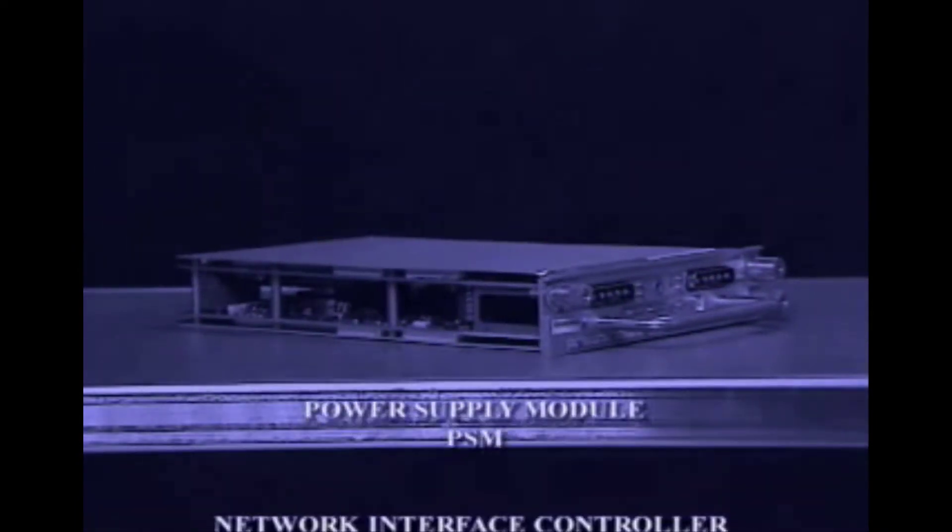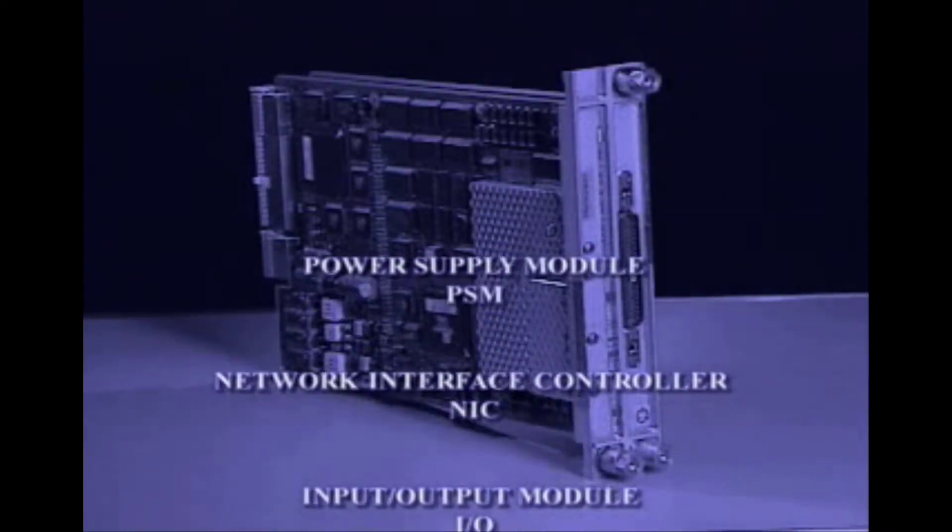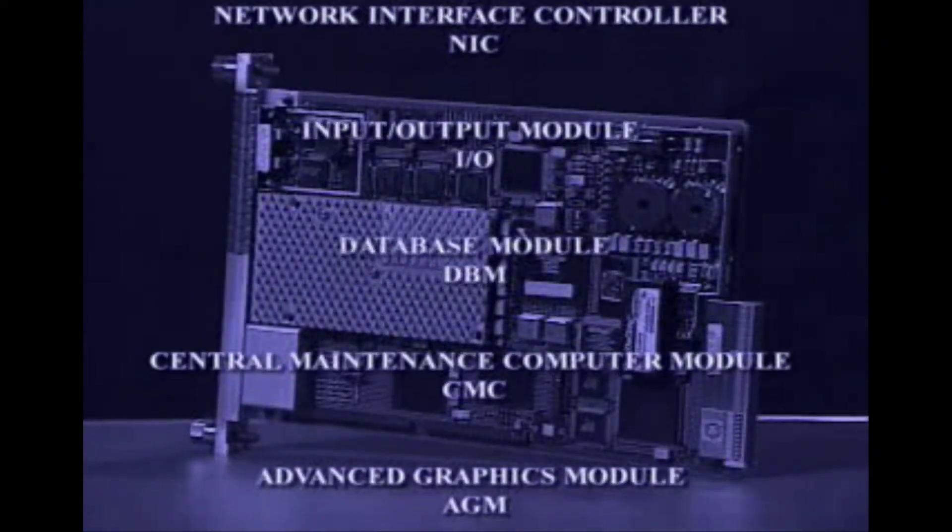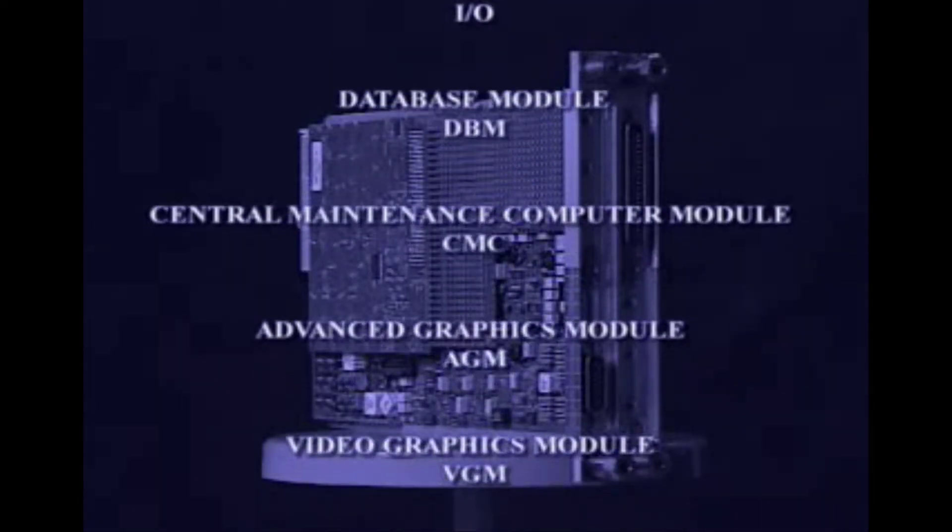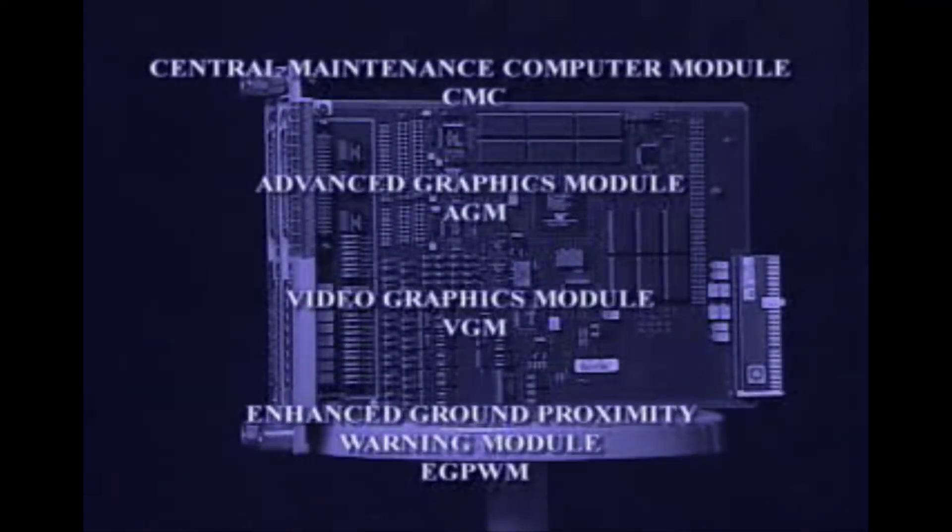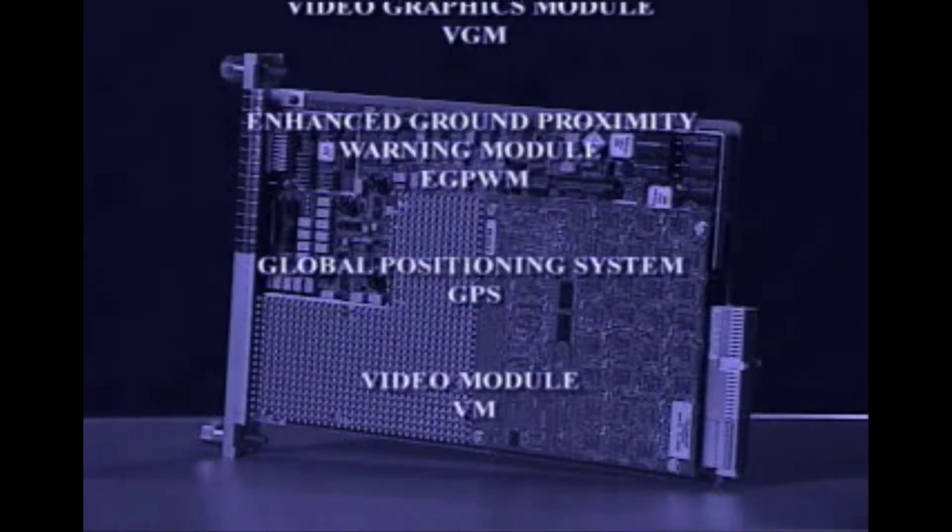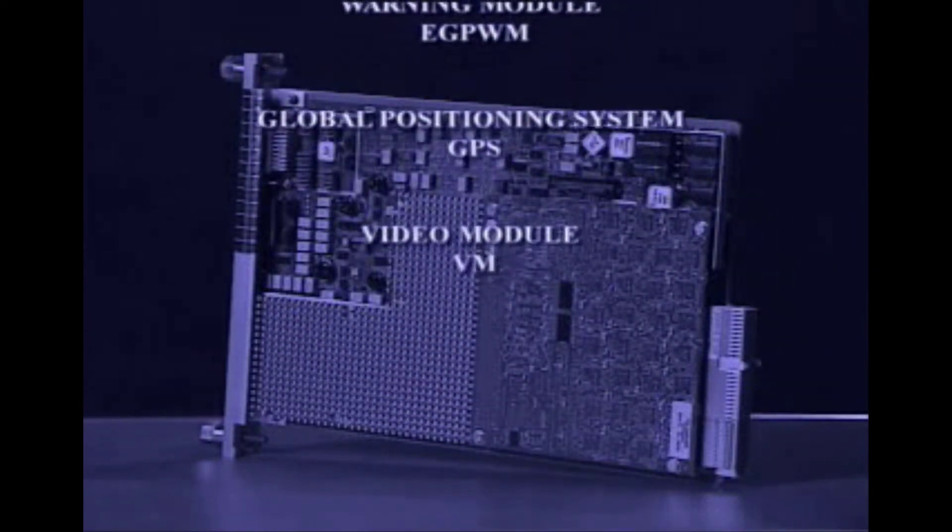Typical MAU modules include Power Supply Module, Network Interface Controller, Input-Output Modules, Database Module, Central Maintenance Computer Module, Advanced Graphics Module, Video Graphics Module, Enhanced Ground Proximity Warning Module, Global Positioning System Module, and Video Module.